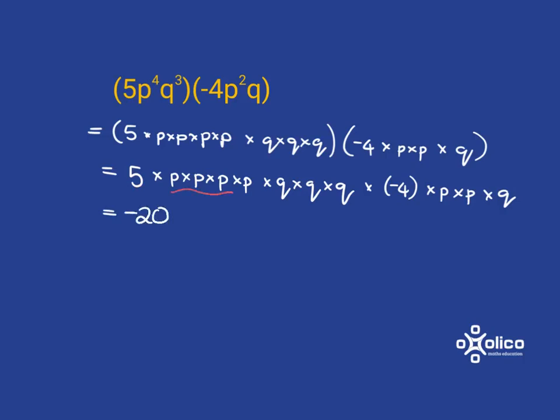Then if I have a look, I've got a whole lot of P's, and I can see that I've got 4 P's and a further 2 P's multiplied together. So I've got 6 P's all multiplied together. And then with the Q's, I've got here 3 Q's and then a further 1 Q, and so in total I have 4 Q's all multiplied together.